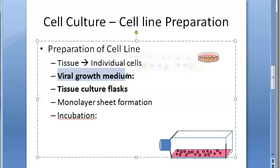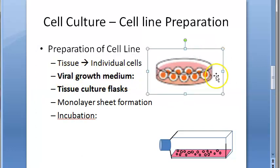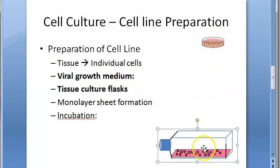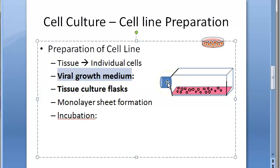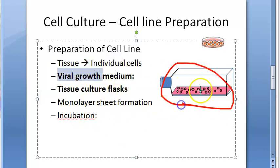The cells are then washed, counted, and suspended in a viral growth medium containing balanced salt solution, essential amino acids, vitamins, glucose, fetal calf serum, and antibiotics to prevent bacterial growth. A bicarbonate buffer is used to maintain pH at 7.2 to 7.4, and phenol red is added as a pH indicator.